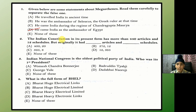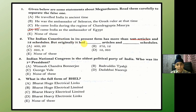The Indian constitution in its present form has more than 440 articles and 12 schedules. But originally it had how many articles and schedules? The answer is 395 articles and 8 schedules.